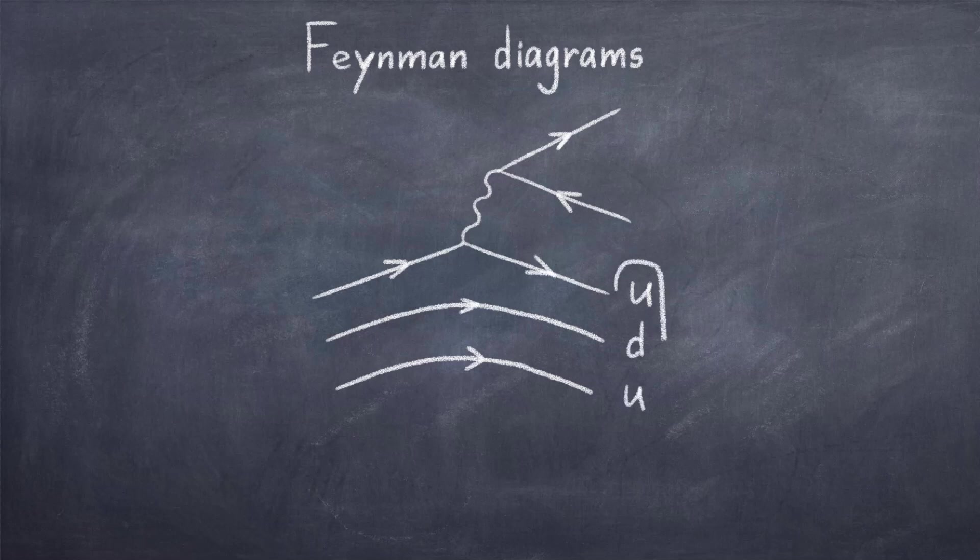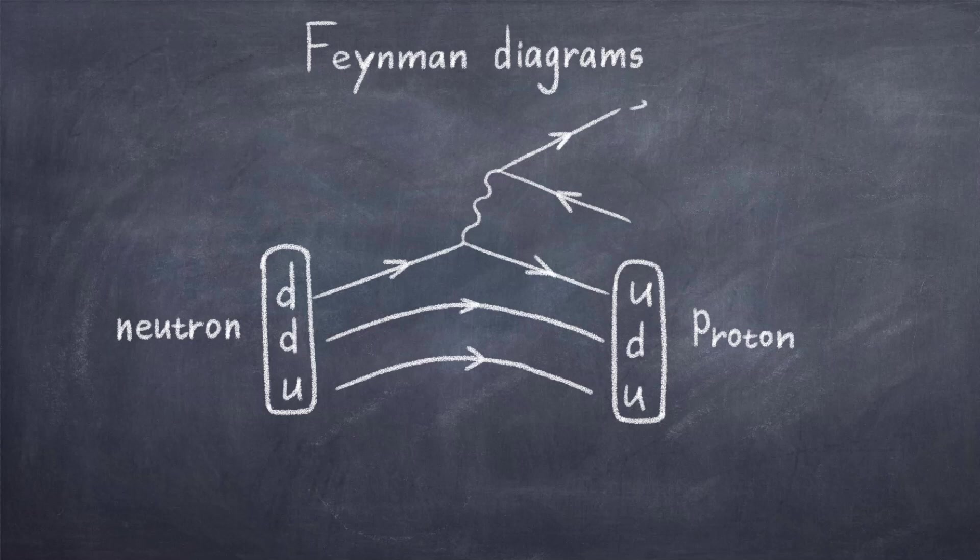Let us write the Feynman diagram of the beta minus decay to illustrate exactly how the weak force makes this decay happen via the W minus boson. First we have a neutron, which is changed into a proton via a W boson. Because the neutron is neutral and the proton has a plus one charge, we must have the negatively charged W boson such that the resultant charge is zero, just like the neutron which started the process.